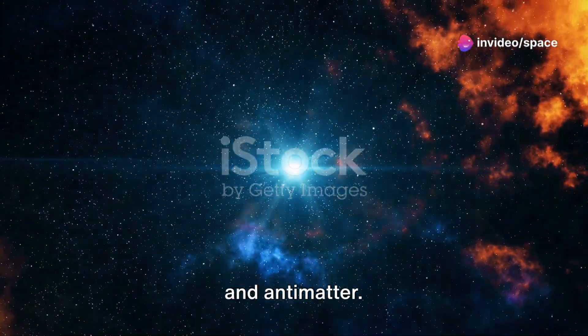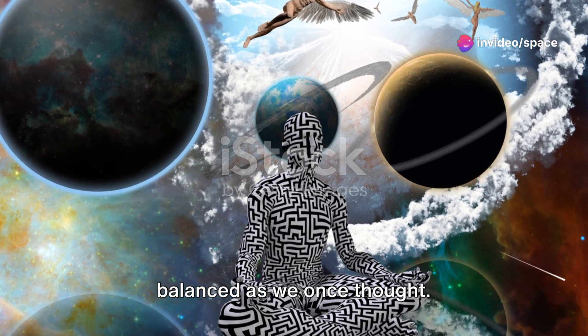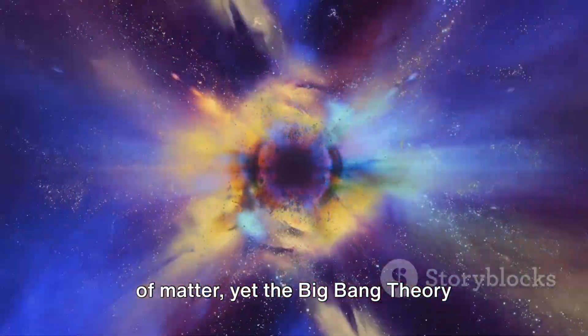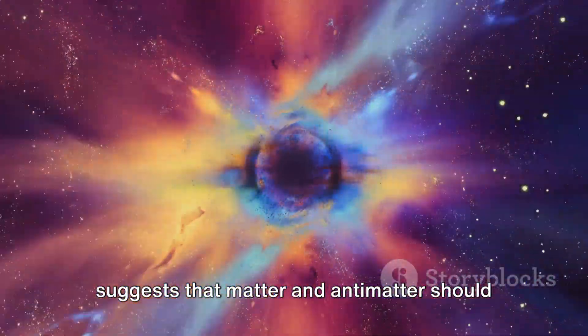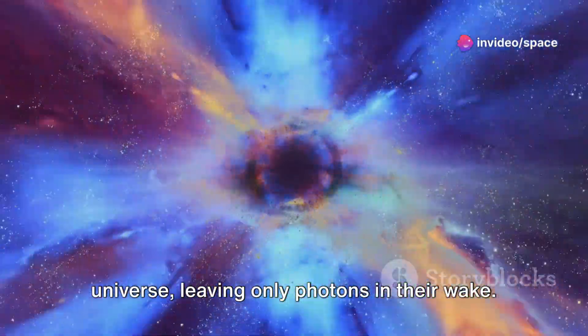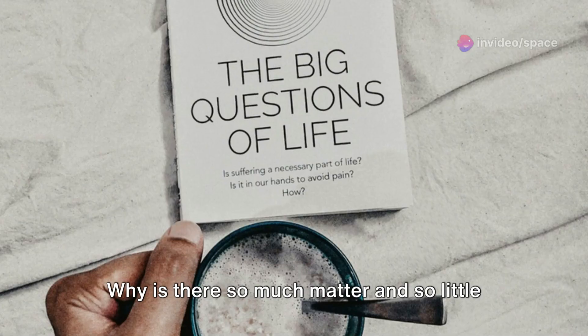We've journeyed through the universe's grand narrative, from the Big Bang's fiery birth to the peculiar imbalance of matter and antimatter. The universe, it appears, is not as balanced as we once thought. Our universe is overwhelmingly composed of matter, yet the Big Bang theory suggests that matter and antimatter should have obliterated each other in the early universe, leaving only photons in their wake.